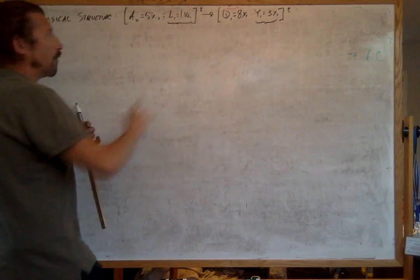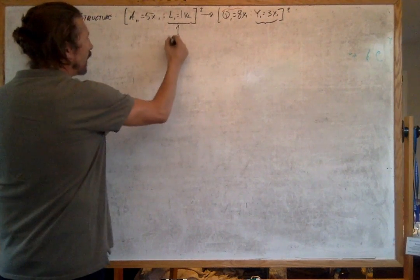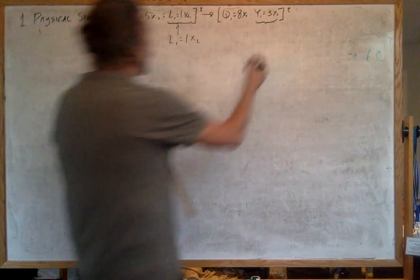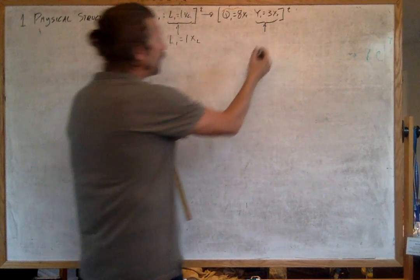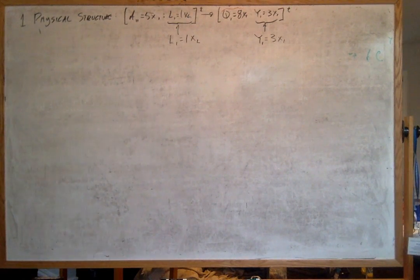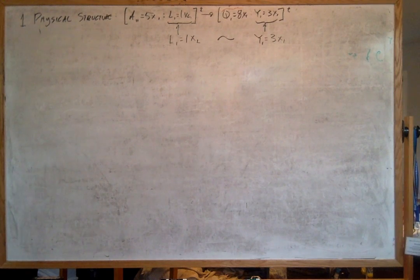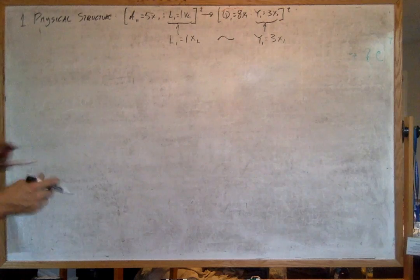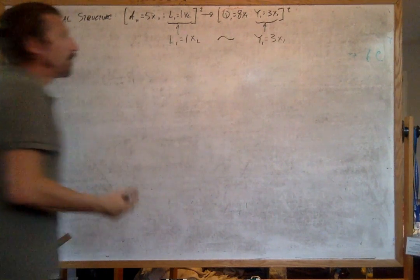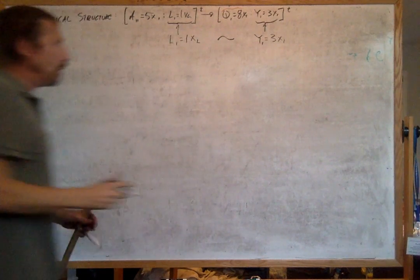We saw a relationship between the gross outputs of the industry and the net output, as well as the means of production requirements for the subsequent round of production. When we net out those five quarters of corn, we're left with the relationship of a magnitude of living labor L1 — equal to one hour — related to Y1, the net output. They're not going to be equal, but there's going to be a congruency. This is what I call the net congruency relationship: an association of the amount of living labor with the amount of newly created net output.